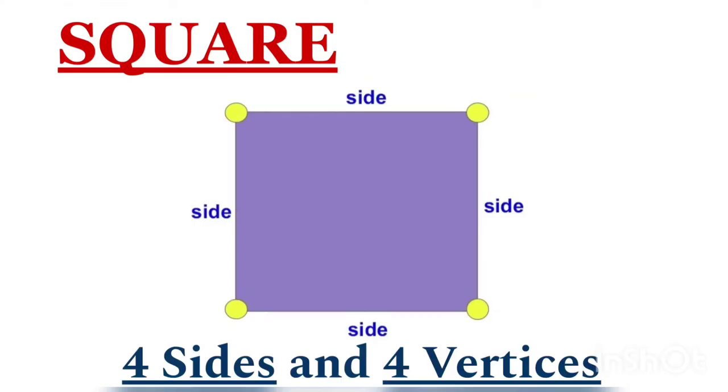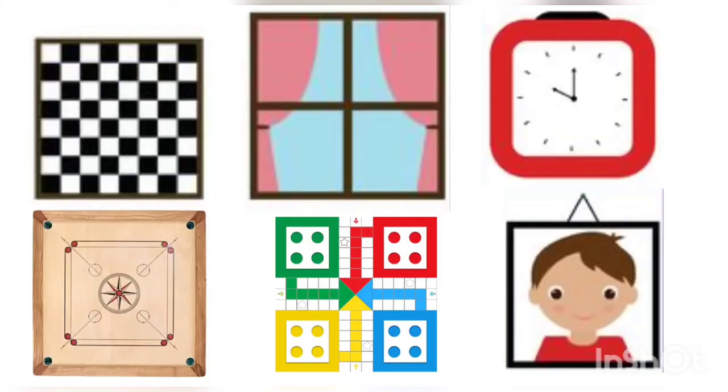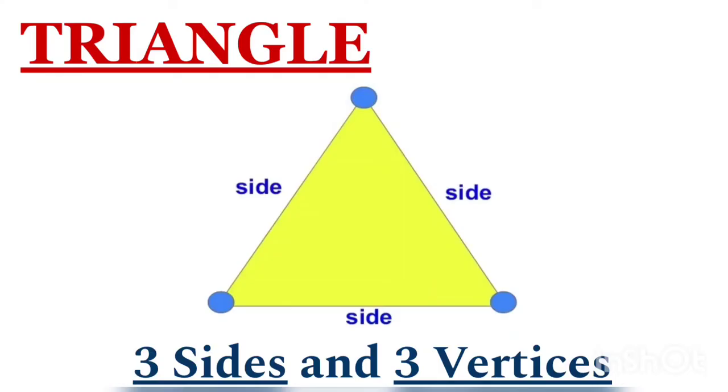Square. This is a square. It has four sides and four vertices. In a square, all sides are equal. These are some examples of square: chess board, carom board, window, ludo board, clock, and photo frame.